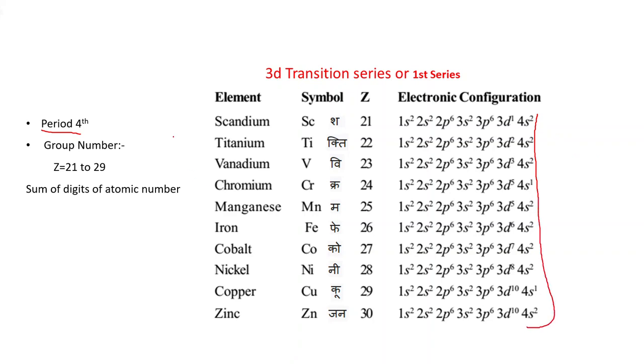How can we identify the group number? So this is one shortcut technique. If we are having atomic number 21 to 29, this technique is only applicable to these elements. Then if you sum the digits of atomic number you will get the group number. For example, scandium atomic number is 21. If you add 2 plus 1 equals 3, it means scandium belongs to the 3rd group. In the same way, manganese atomic number 25: 2 plus 5 equals 7. Manganese belongs to the 7th group.